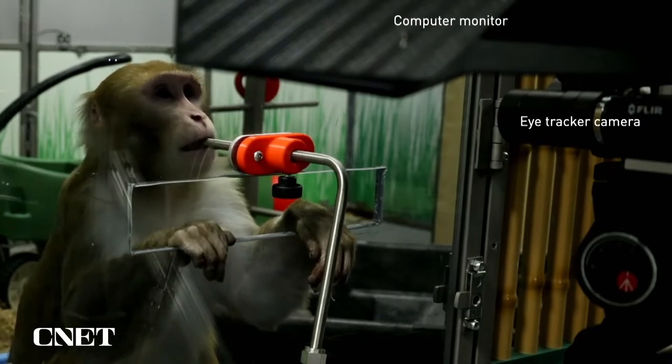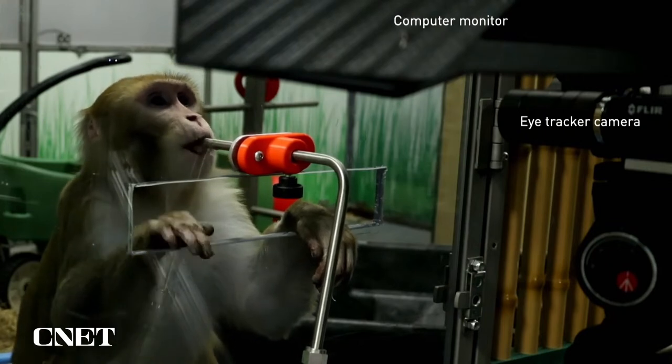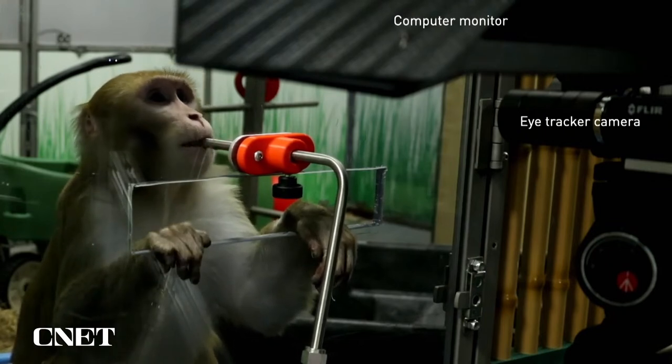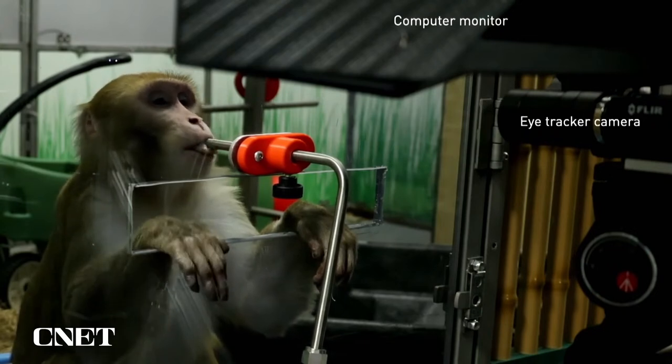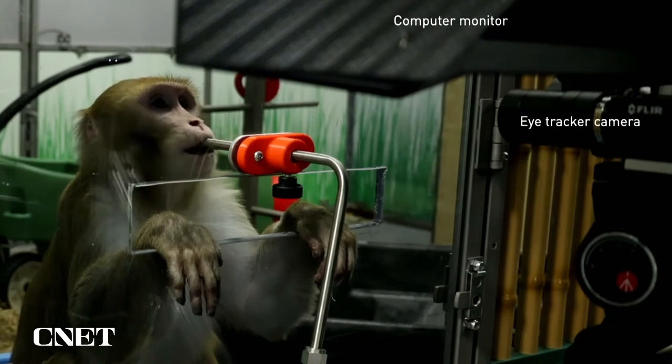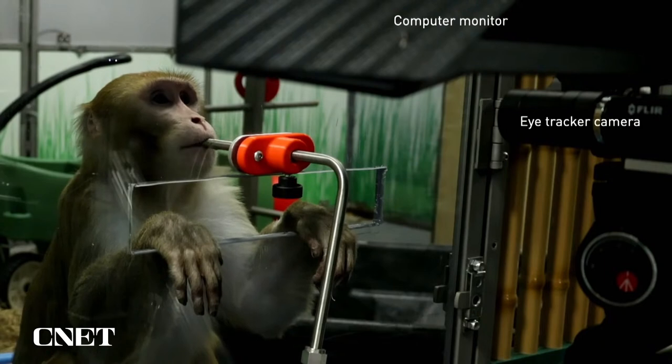That means we can easily teach them to fixate points on a screen and reward them. We can reward them very precisely because we can track the location of their eye using an infrared camera. One of the things this allows us to do is to plot the receptive fields for every neuron that we can record with a single device.